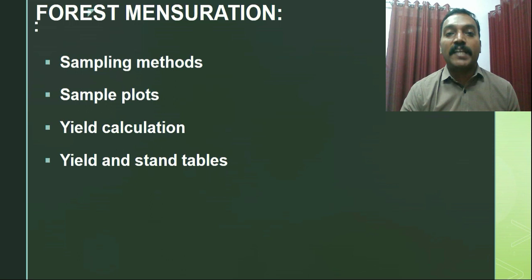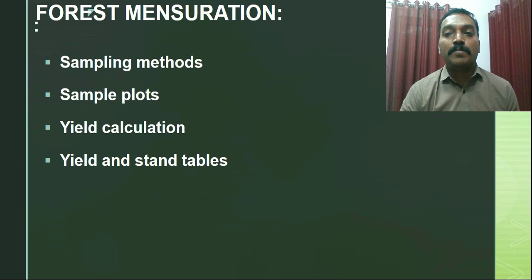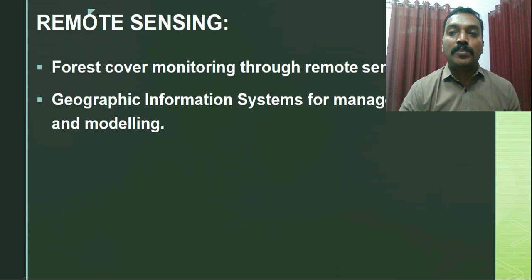After sampling methods and sample plots, we will study yield calculation, which is a very important parameter giving a true picture of forest productivity. Following yield calculation using various methodologies, we will also study yield tables and stand tables in detail. These two tables are commonly used in forest mensuration and give complete details of a given forest area, including thinning and true volume. For many common species such as teak and sal, these yield and stand tables are already available.